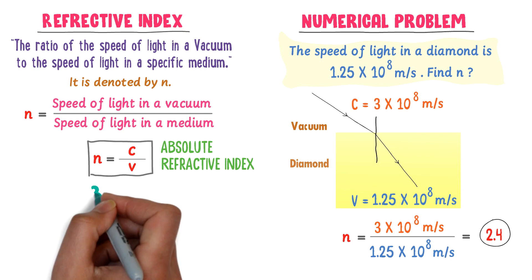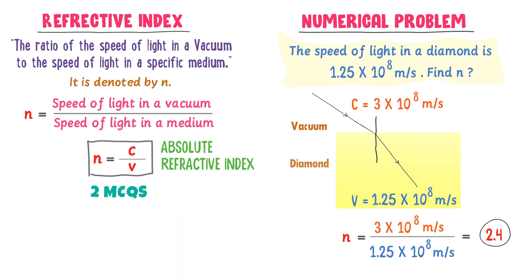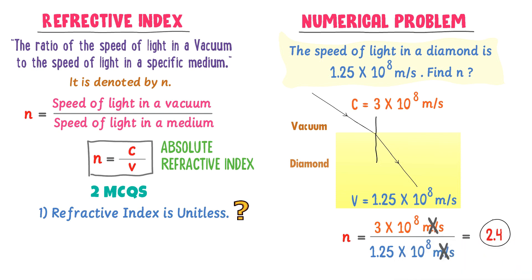Here are two bonus MCQ points. First, refractive index is unitless — it has no unit. This is because refractive index is a ratio between two similar quantities: the unit of speed in the numerator and the unit of speed in the denominator cancel out. Therefore, refractive index is unitless.